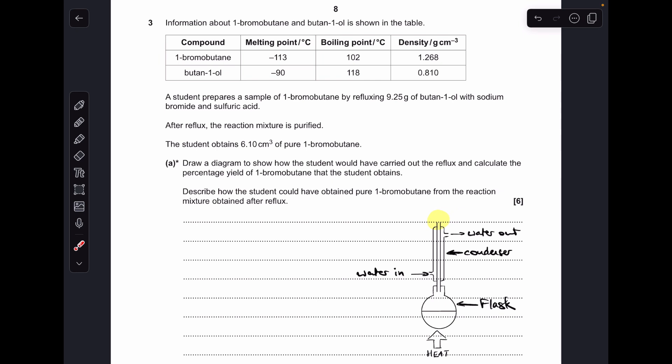First thing we need is a flask to heat up the reaction mixture in so that can either be round bottom or pear shaped. Just be careful there's no gaps here so you don't want any vapors looking like they can escape out of the system.